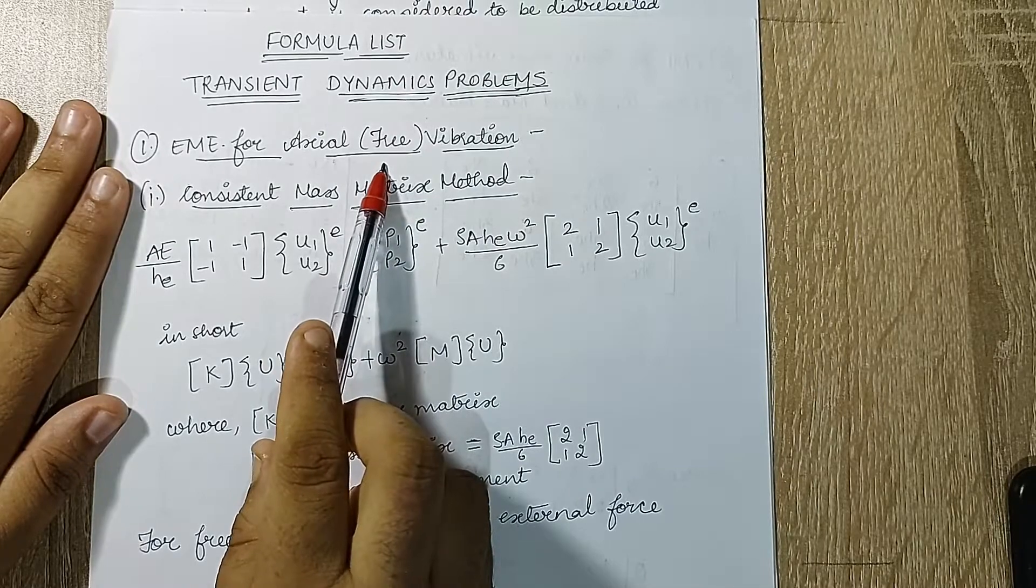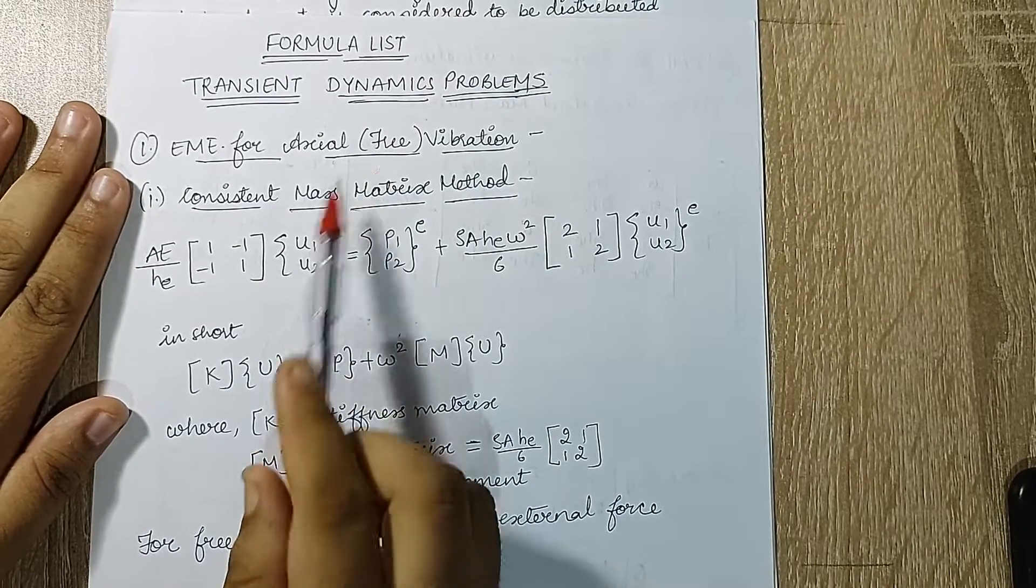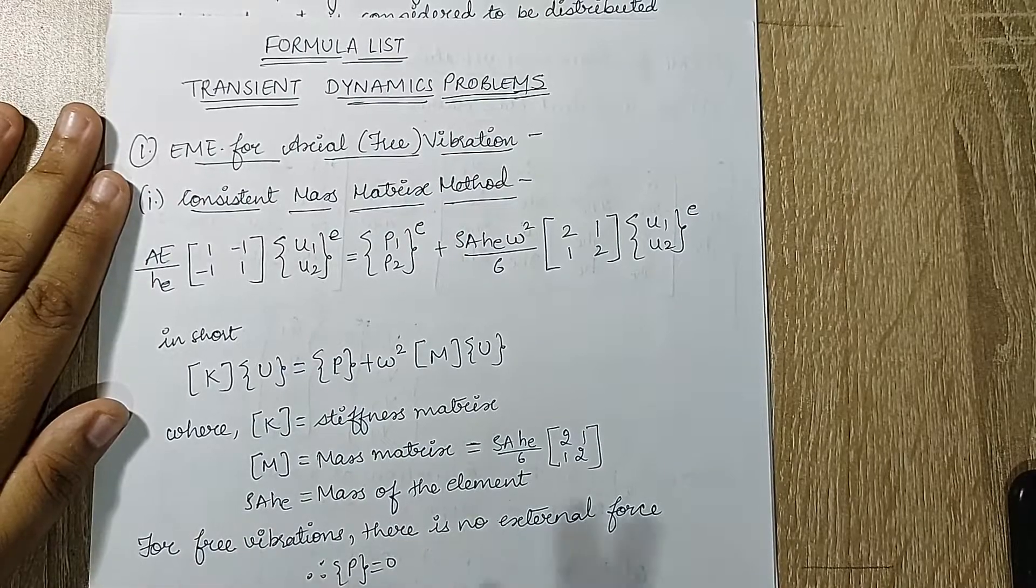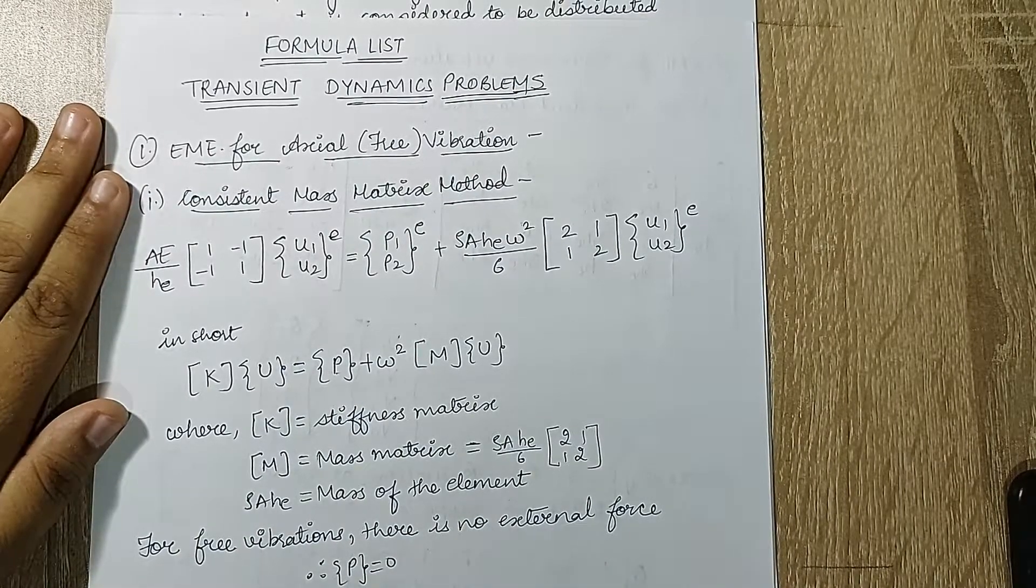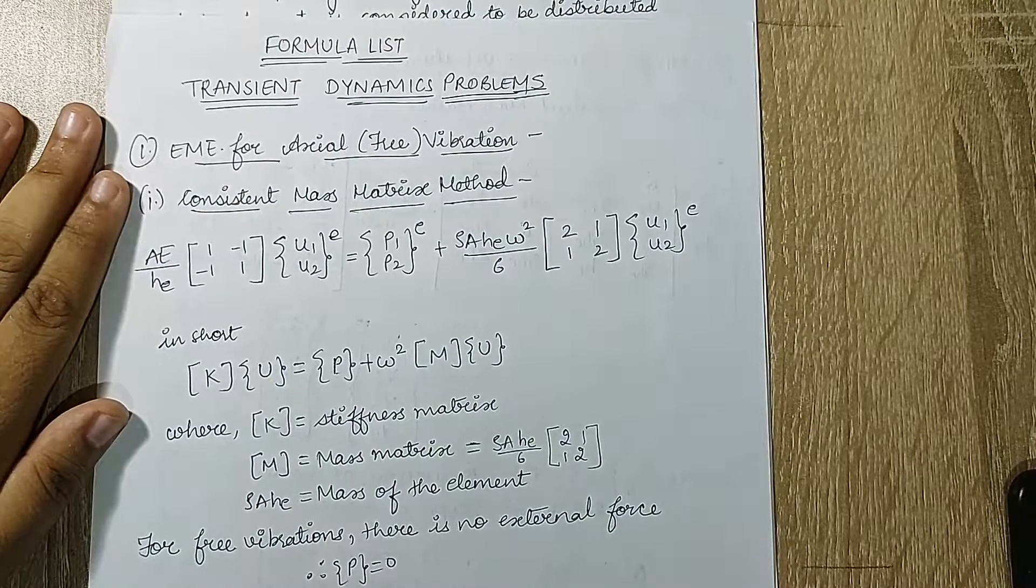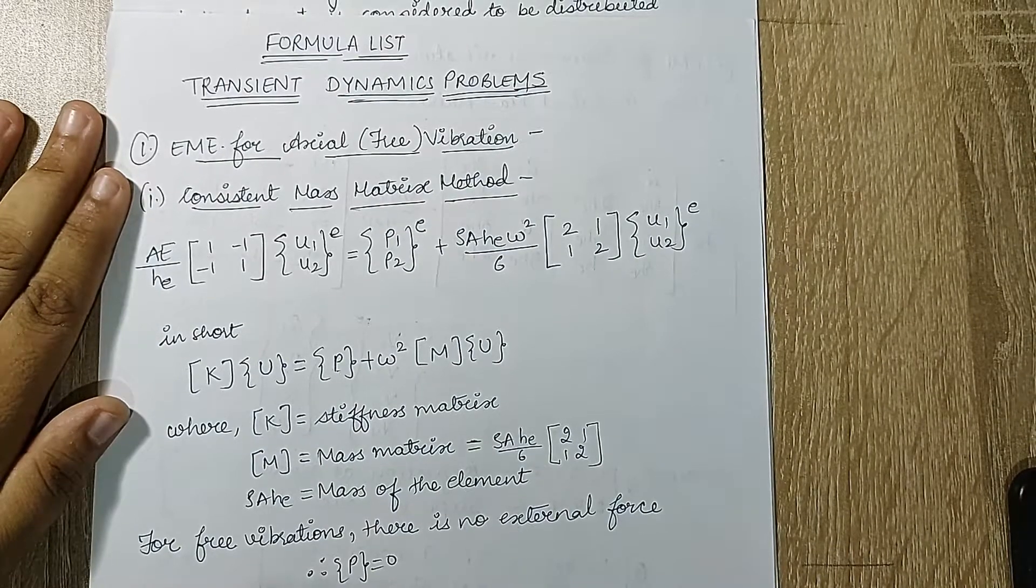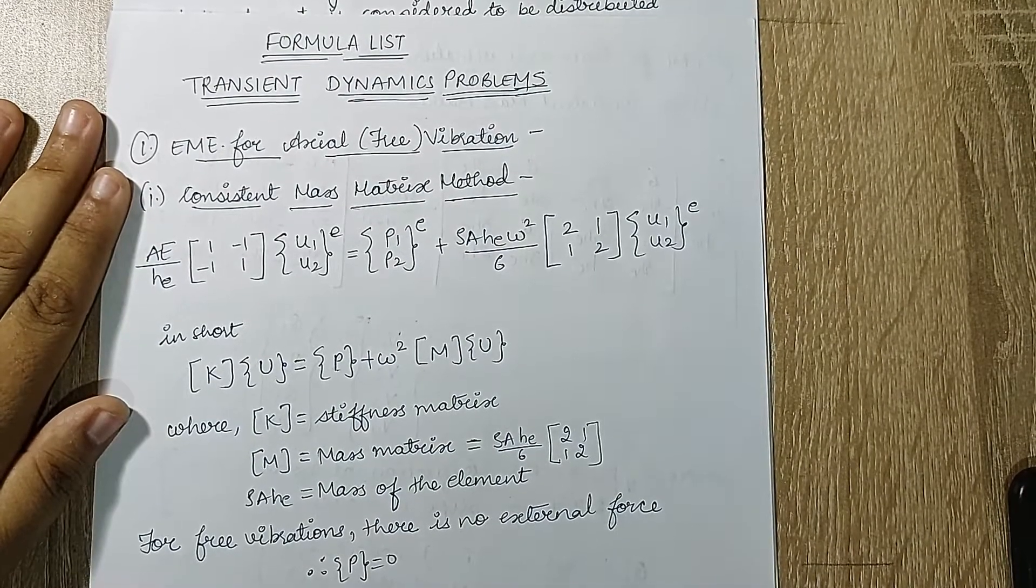Axial vibration is also called free vibration. Free vibration means there is no external force applied on the body, and still the body has some type of vibration. That is because of some internal molecular changes.